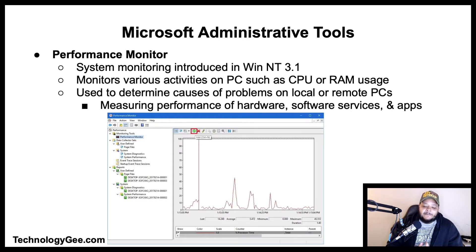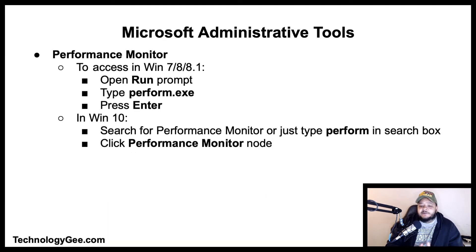The Performance Monitor is a system monitoring program introduced in Windows NT 3.1. It monitors various activities on a computer such as CPU or memory usage, and may be used to determine the cause of problems on a local or remote computer by measuring the performance of hardware, software, services, and applications. To access it in Windows 7, 8, and 8.1, open the Run prompt and type perfmon.exe. In Windows 10, search for Performance Monitor or type perfmon in the search box.